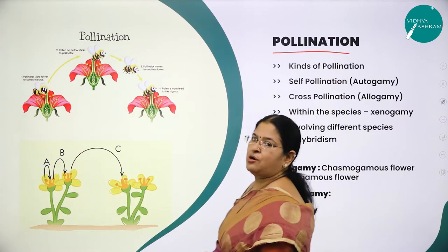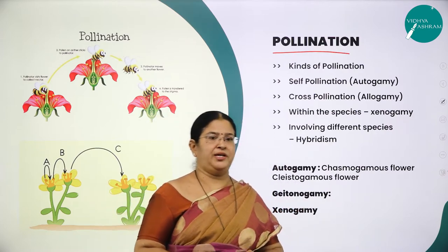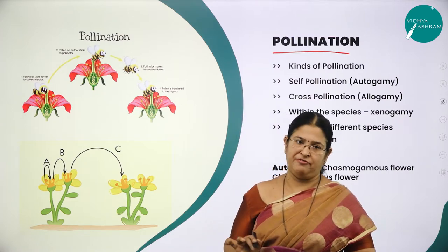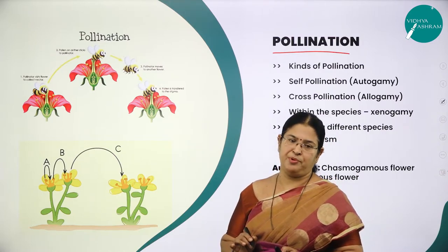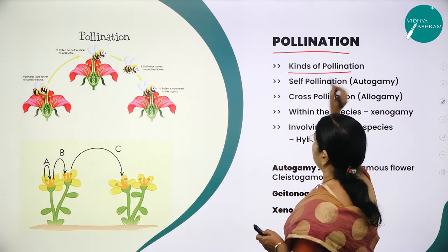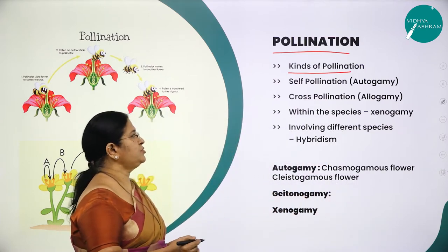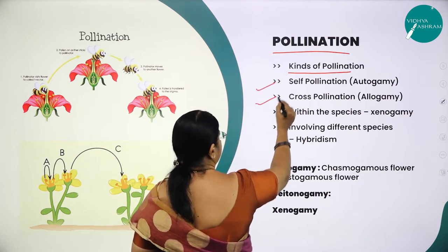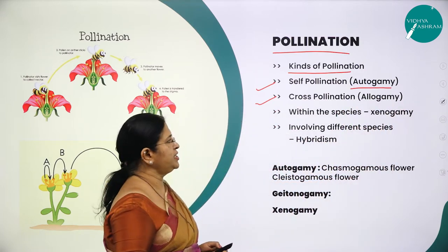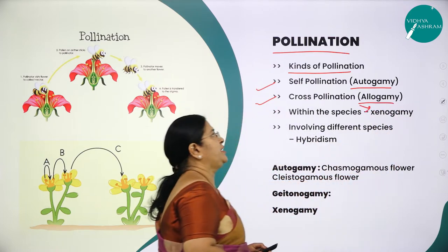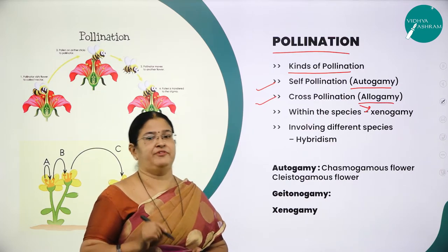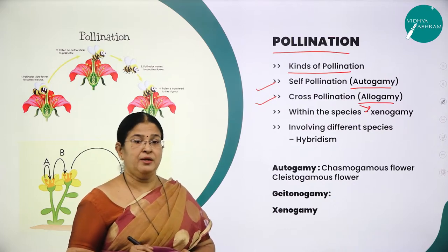Moving on to a next very important concept called pollination. Pollination is nothing but the transfer of pollen grains from the anther of a flower to the stigma of a flower. There are two important types: self-pollination, also called autogamy, and cross-pollination, also called allogamy or xenogamy. Self-pollination is the transfer of pollen grains from the anther to the stigma of the same flower, which is possible in bisexual flowers.